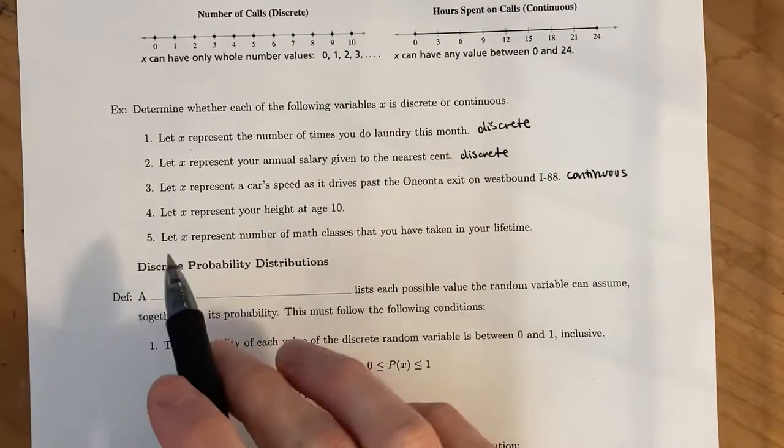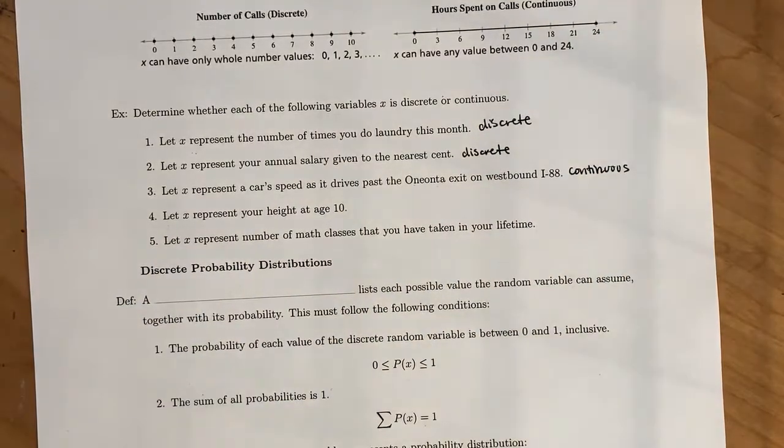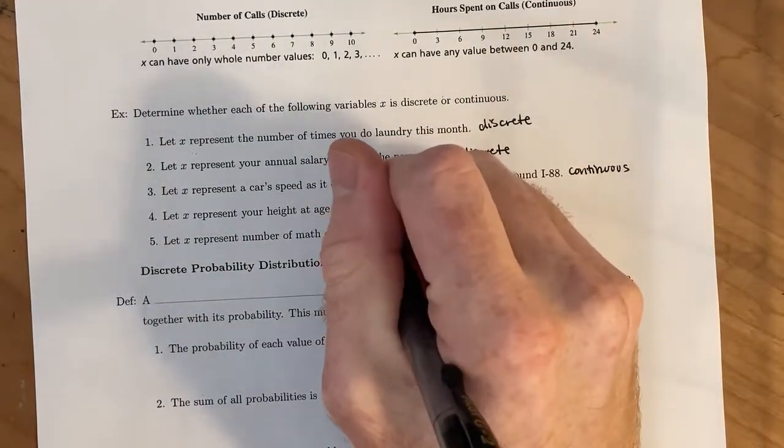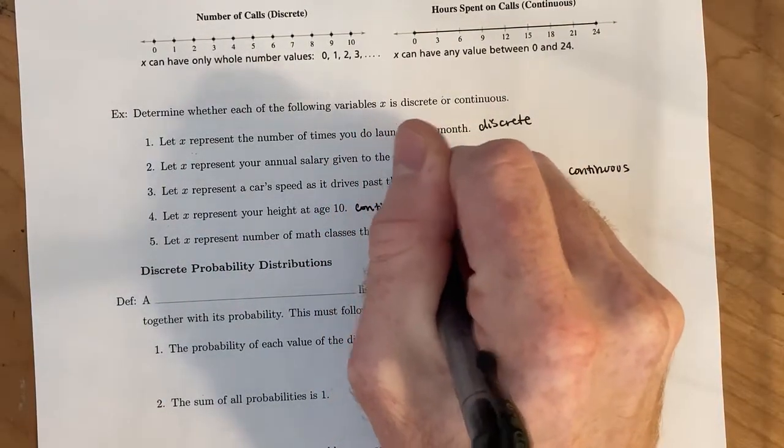And then let x represent your height at age 10. And so you might be hitting growth spurts. And your height, there's not going to be a jump between how tall you are at one second and then how tall you are at the next second, you're going to go through the entire span of the differences of those heights. And so this is also an example of something that is continuous.